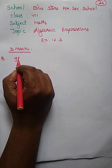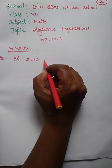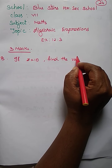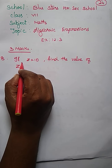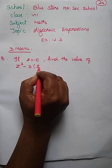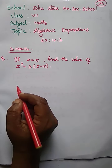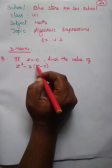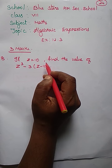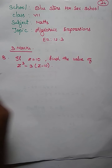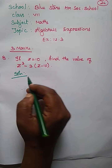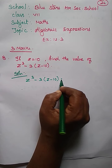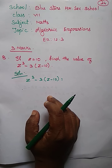If Z is equal to 10, find the value of Z cube minus 3 into Z minus 10. Z cube minus 3 into Z minus 10. This is the question. We substitute the value of Z is 10. Now let's try the expression Z cube minus 3 into Z minus 10. We want to simplify that expression first.